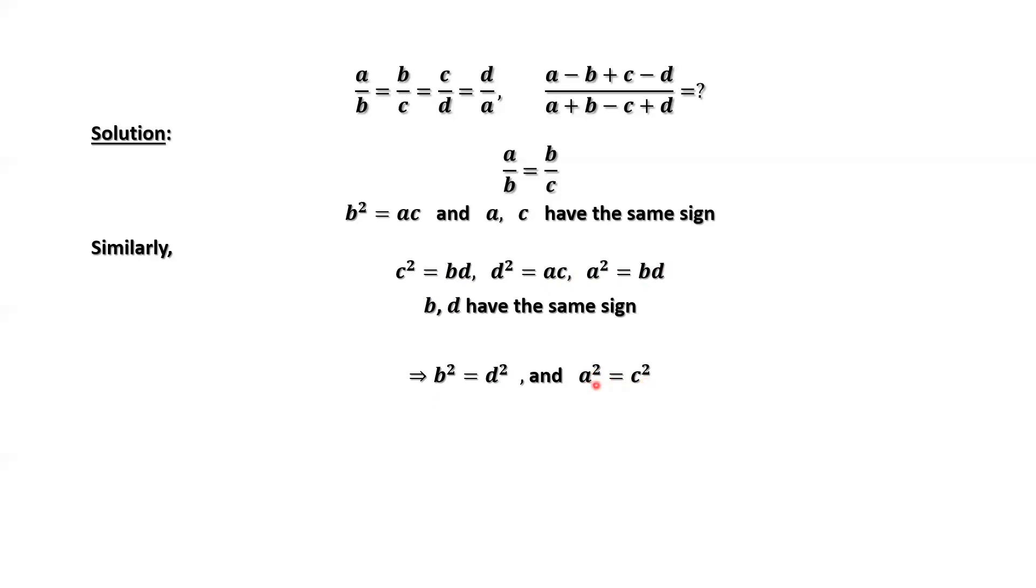Because A and C have the same sign, and B and D have the same sign, then we have B equals D and A equals C.